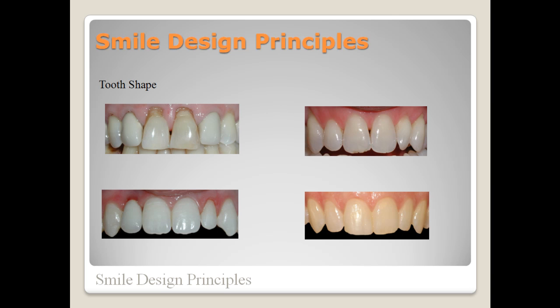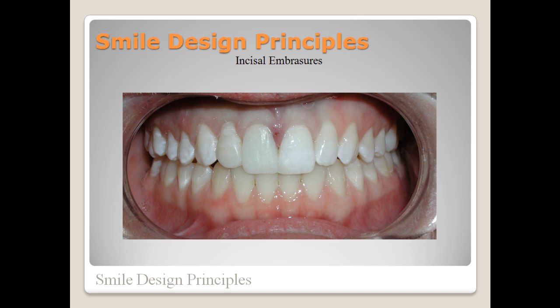Two factors related to tooth shape are the interproximal contact area and the incisal embrasures. The incisal embrasures are formed by the corners of the incisal edges of the anteriors and should increase slightly from central to canine. Designing teeth with adequate incisal embrasures can change the appearance from looking old and worn, where there are no incisal embrasures, to looking young, where the embrasures are pronounced and the incisal edge is not flat from wear.